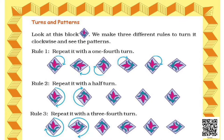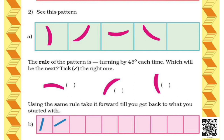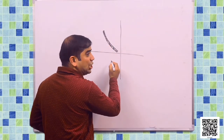Let us go through question number 2. As you can see in your book, there are four pictures. What rule does this pattern follow? It is following the rule of turning by 45 degrees each time. The question asks which is the next position of that particular picture — three options are given from which you have to select the next position. At the fourth position, the picture is like this, and as we discussed it is following a 45-degree turn.